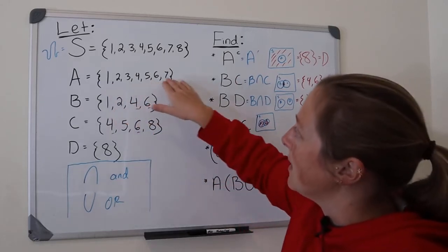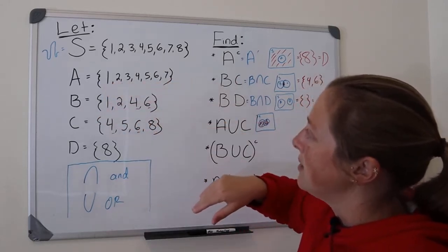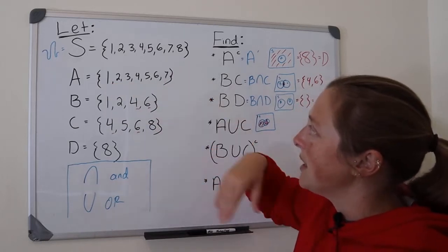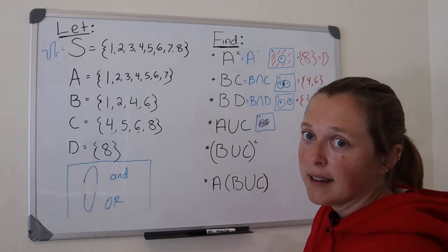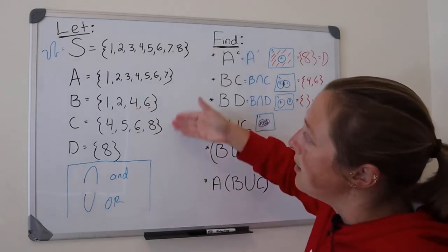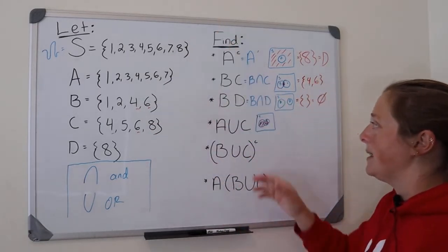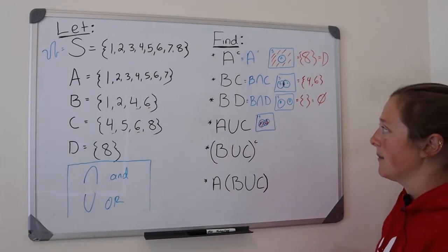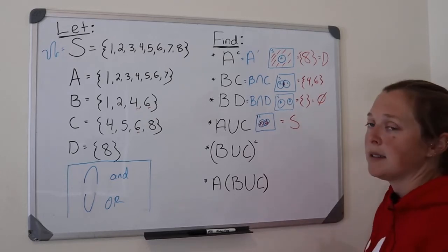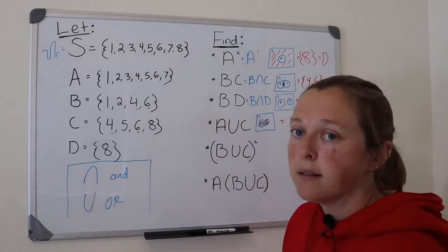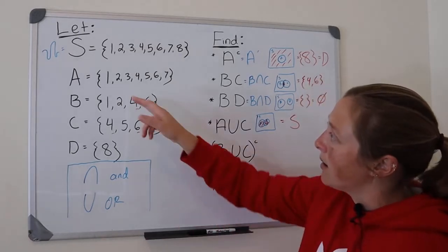If I look here, in A I have one through seven. So I have everything except eight in A. Well, C contains eight, so basically all of my entire sample space is in A or C. So my answer is S or omega.